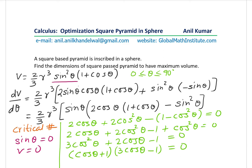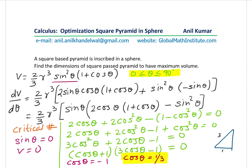This gives two critical numbers: cosθ = −1 or cosθ = 1/3. Since we are working in the domain 0 to 90°, we expect positive values, so cosθ = 1/3 is the value of interest. Sketching a right triangle: if cosθ = 1/3, adjacent = 1 and hypotenuse = 3, so the opposite side is √8. Therefore sinθ = √8/3.